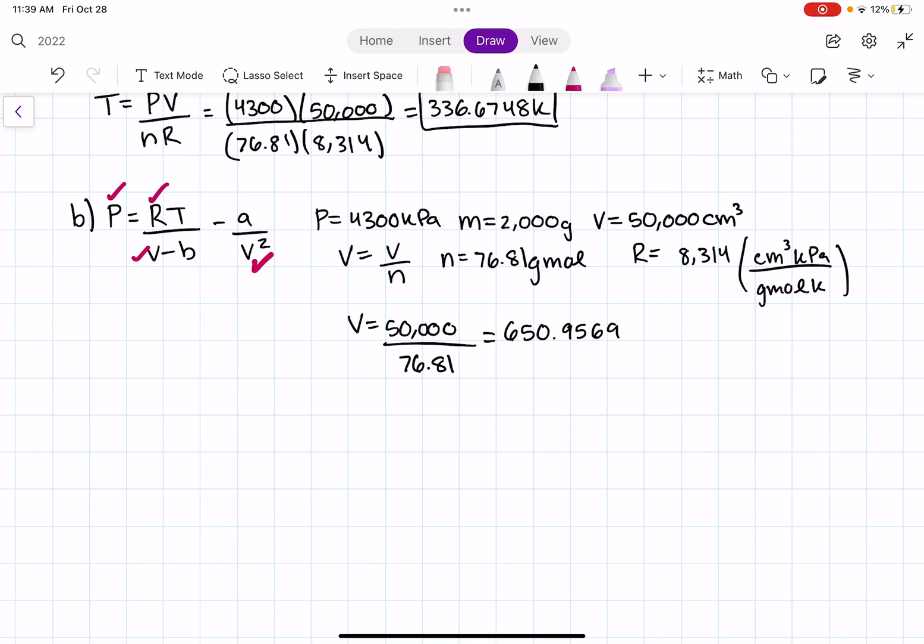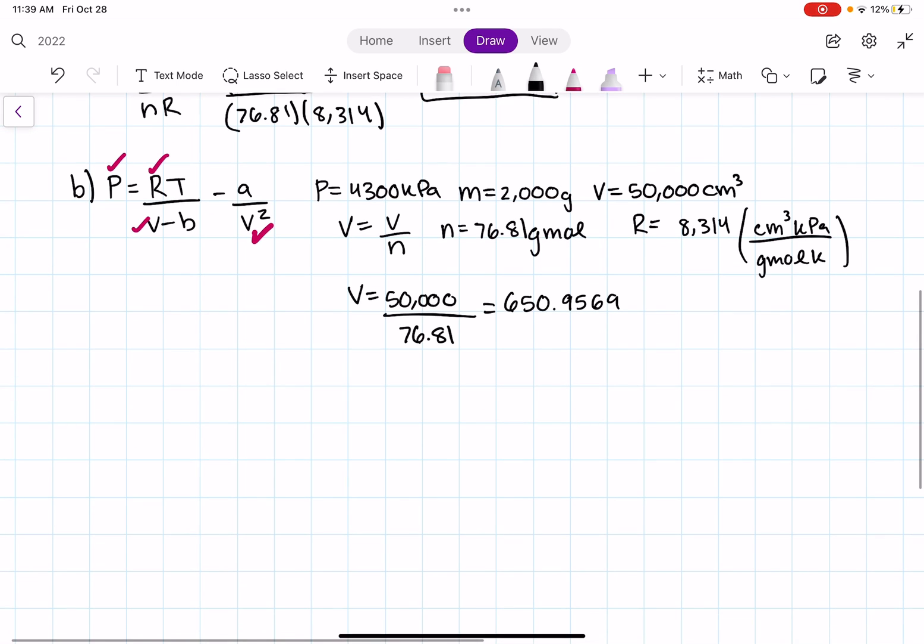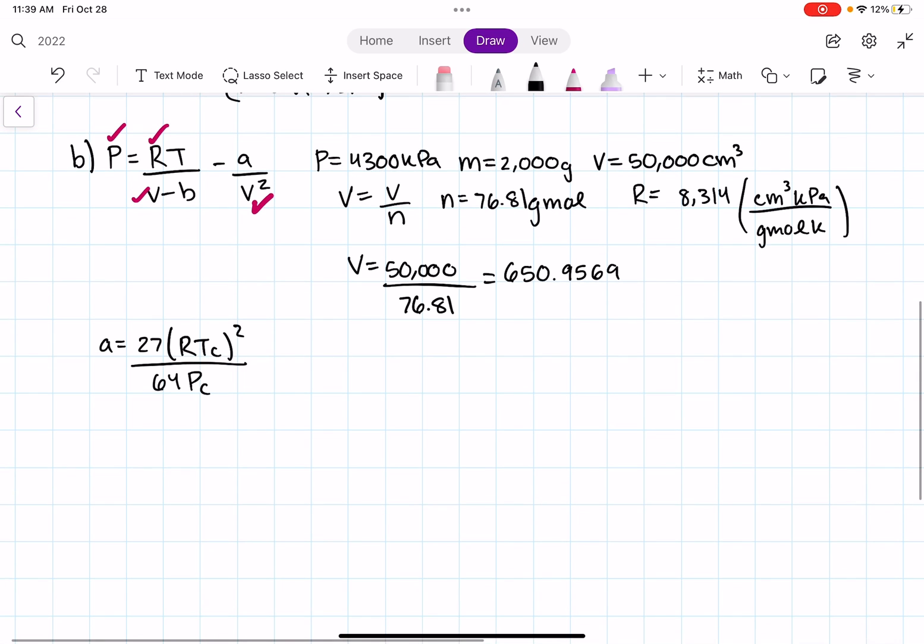We don't know A or B, but in order to find A or B, we have our formula. Our formula to find A is the following. It's this one right here. And then we're also going to have to find B. And the formula to find B is this one right here.